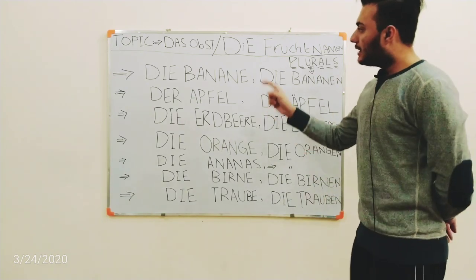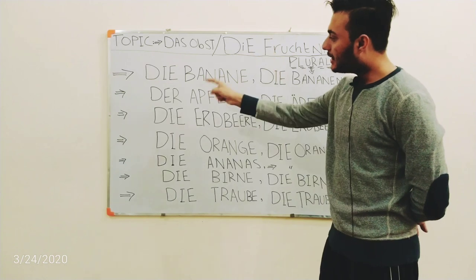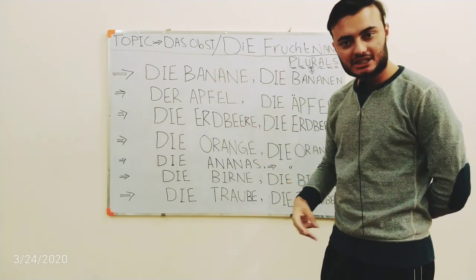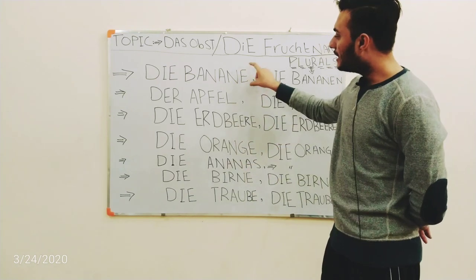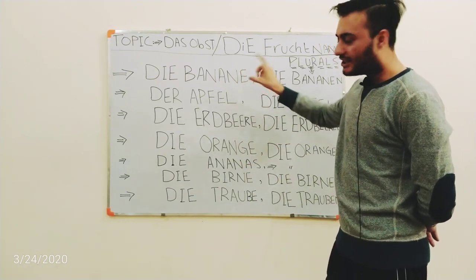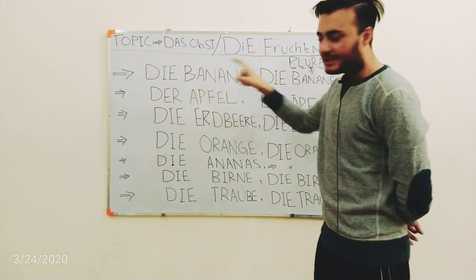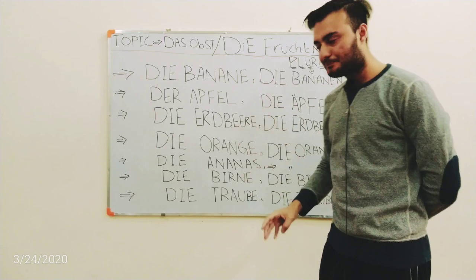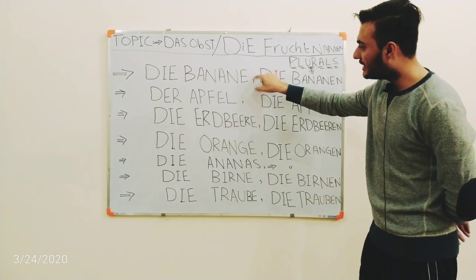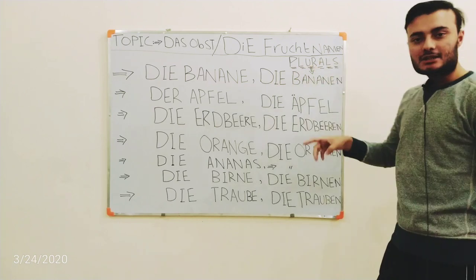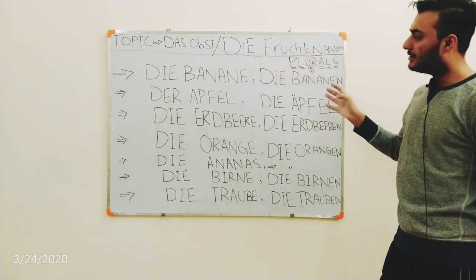The first word is 'die Banane' — the banana. In English we say 'banana,' so the German version is similar — just a difference of 'e' replacing the final 'a,' giving us 'Banane.' Its plural will be 'die Bananen' — just an extra 'n' is added. So 'die Banane' is singular and 'die Bananen' is plural for bananas.